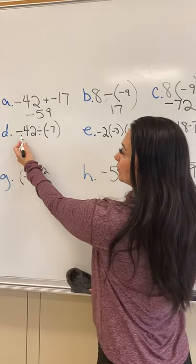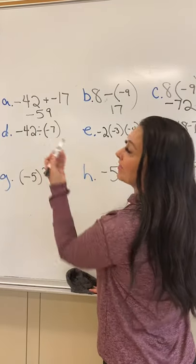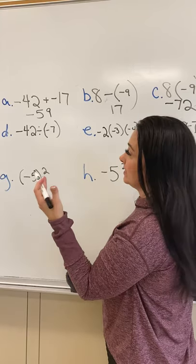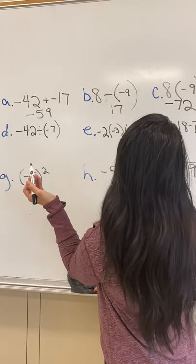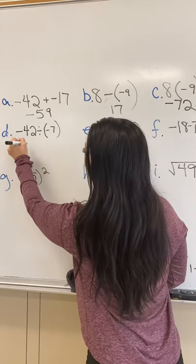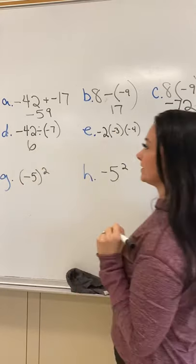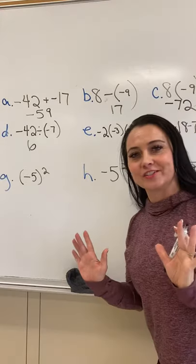And for D, we have negative 42 divided by negative 7. A negative divided by a negative is a positive answer, and 42 divided by 7 is 6. So it'll be a positive 6.